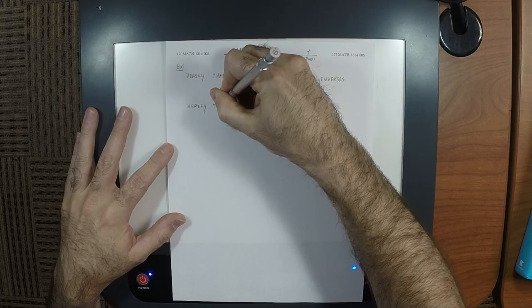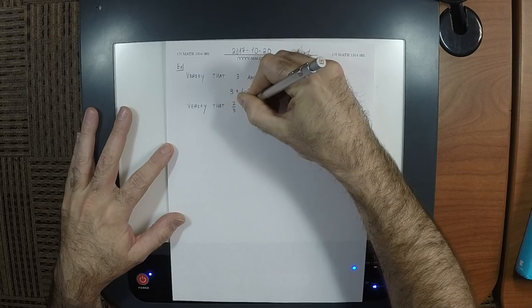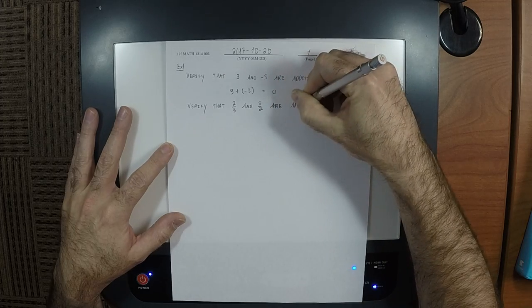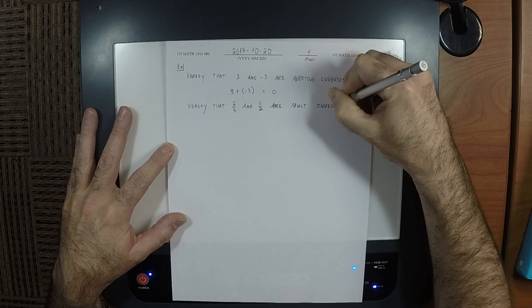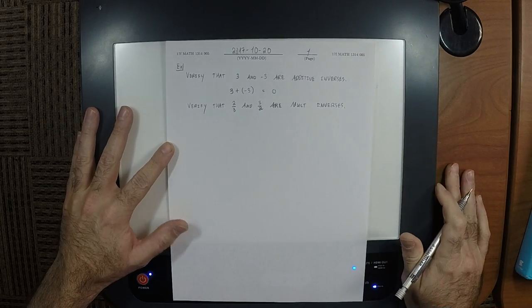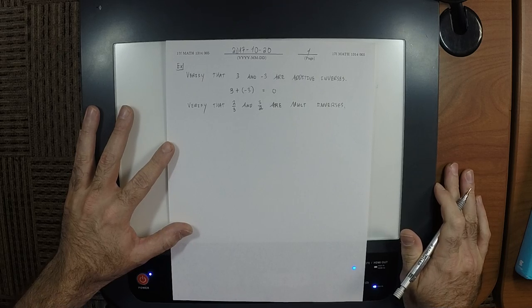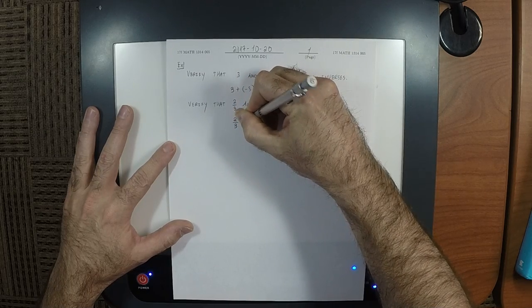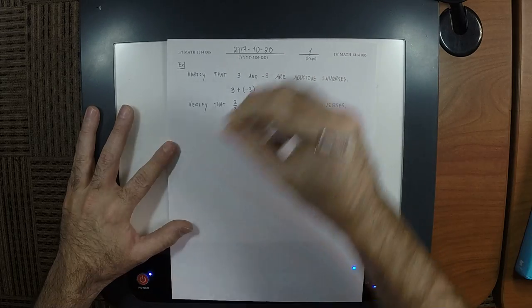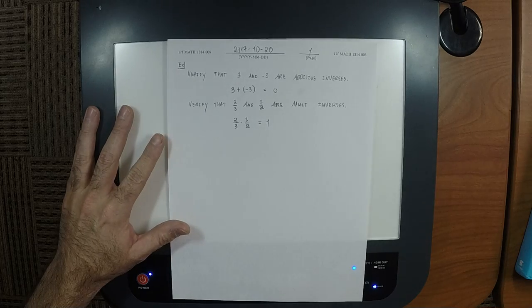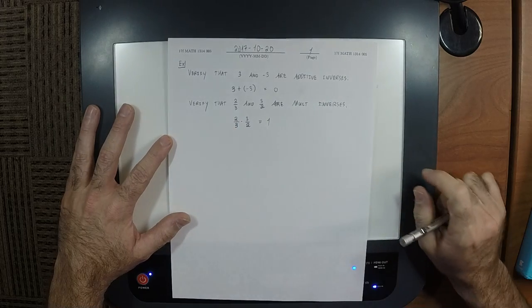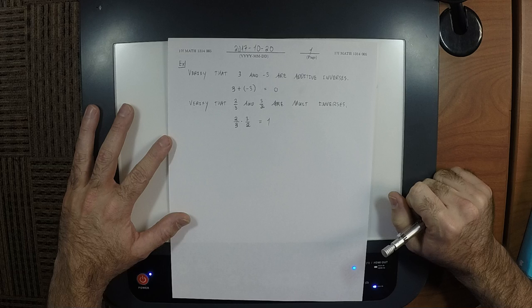Verify that 2/3 and 3/2 are multiplicative inverses. How do you do that? Multiply them together. And what do you get? One. And why is that notable? One is the multiplicative identity. So to verify that 2/3 and 3/2 are multiplicative inverses, you multiply them and check whether you get the multiplicative identity.